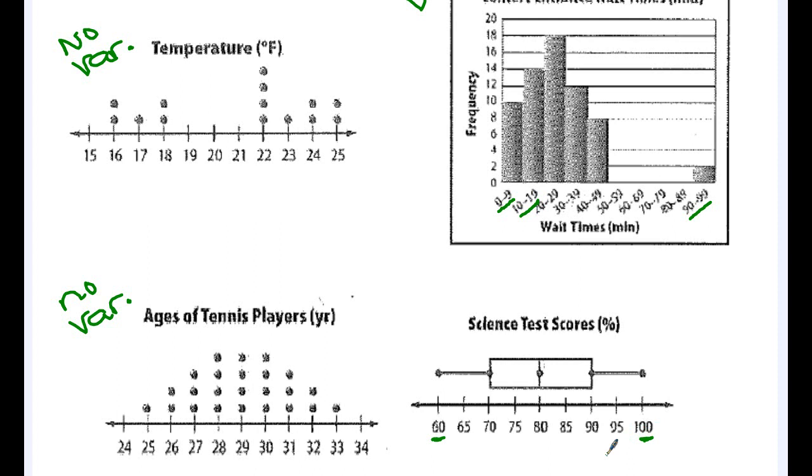So when you're talking about test scores, is that a lot of variety? Can you have a lot of different scores from 60 to 100? Yes, you can. So this one does represent variability.